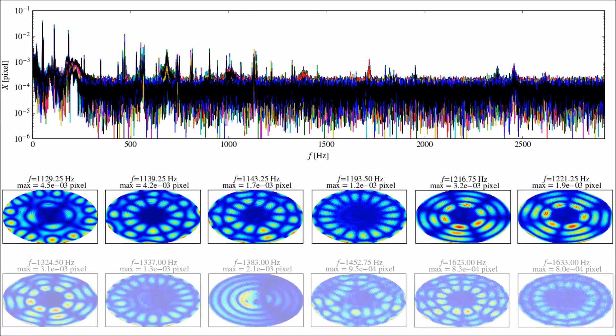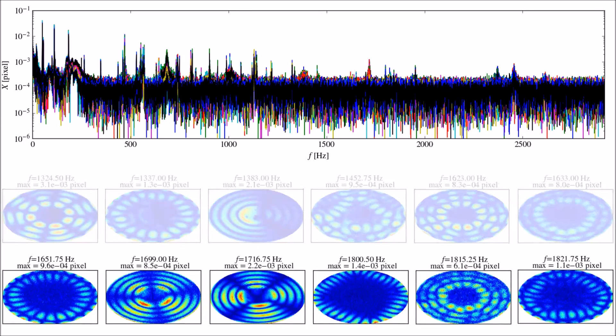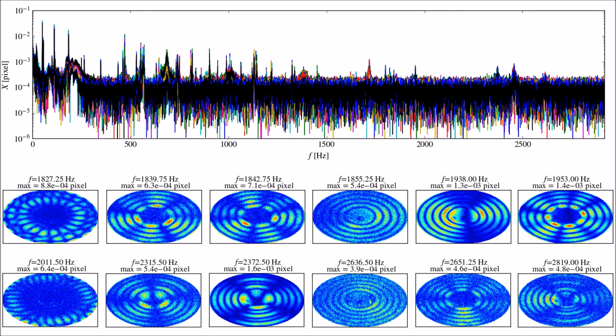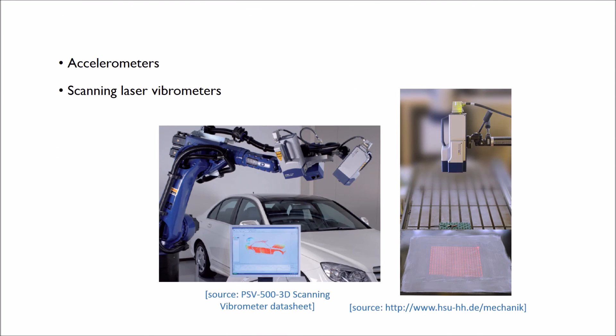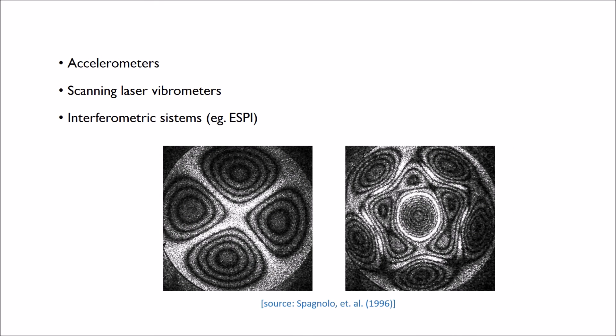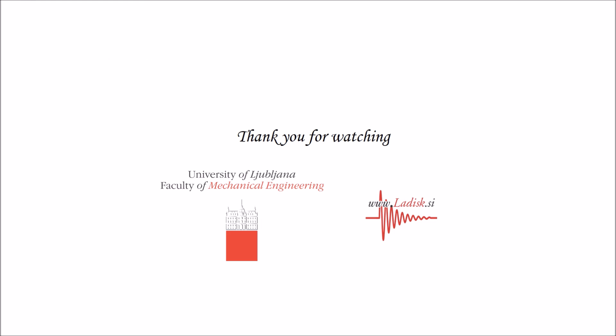Optical measurements using high-speed cameras present a novel approach to measuring vibrations. The high-speed camera measurements produce non-contact, simultaneous, dense full-field measurements and offer an alternative to the classical measurement approaches, such as using accelerometers, scanning vibrometers, or interferometric systems. Thank you for watching.